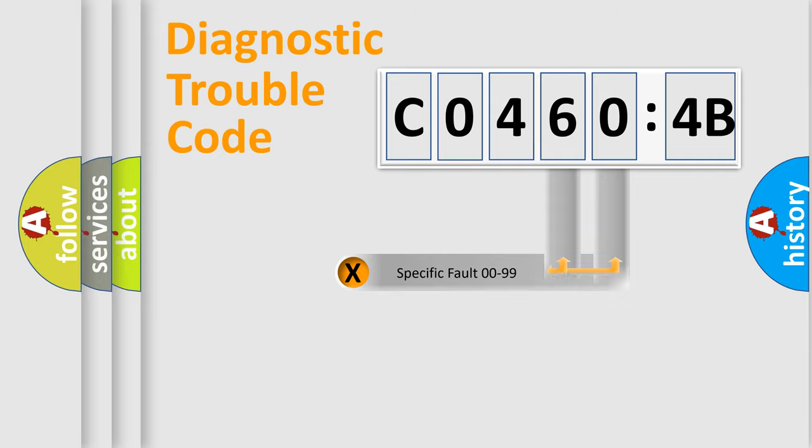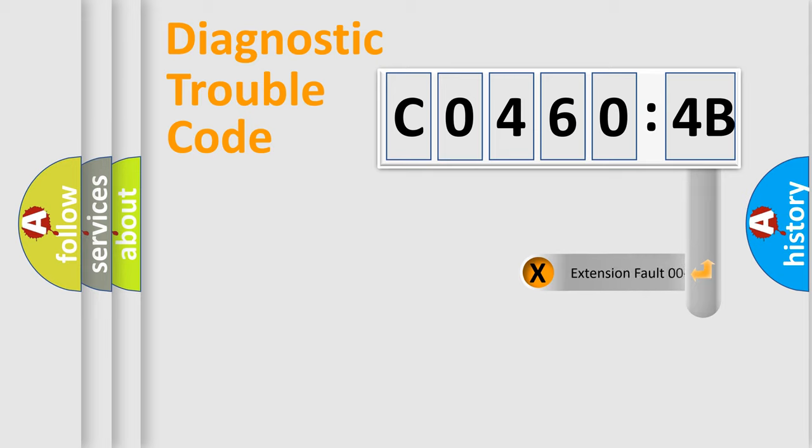Only the last two characters define the specific fault of the group. The add-on to the error code serves to specify the status in more detail.